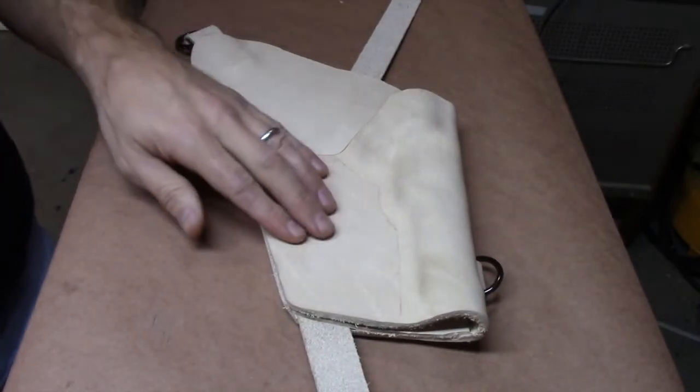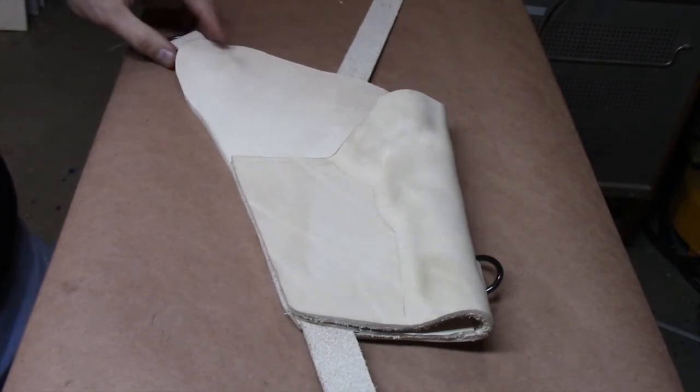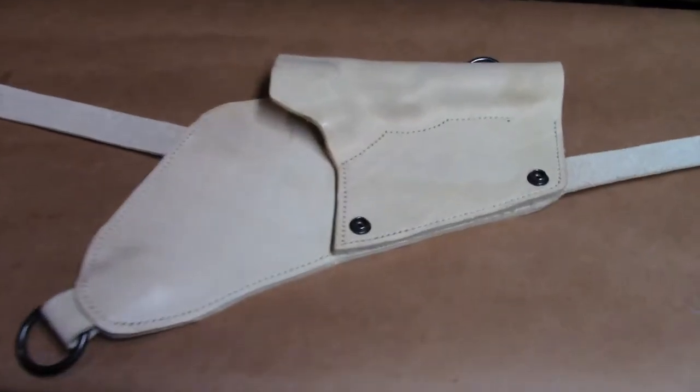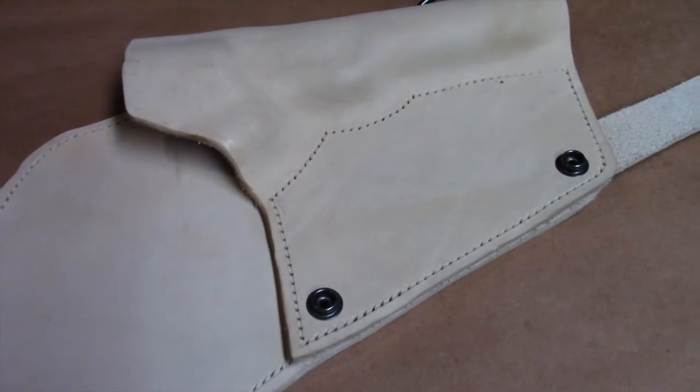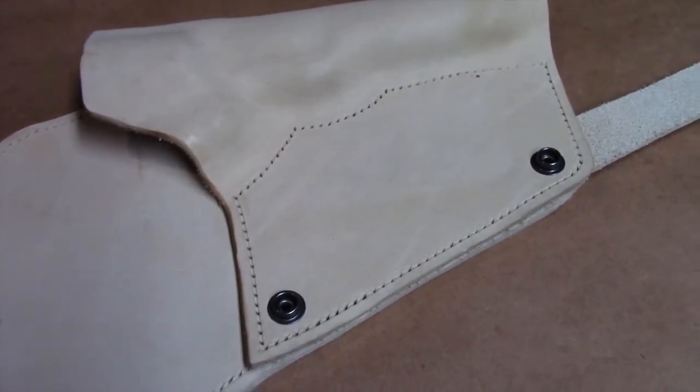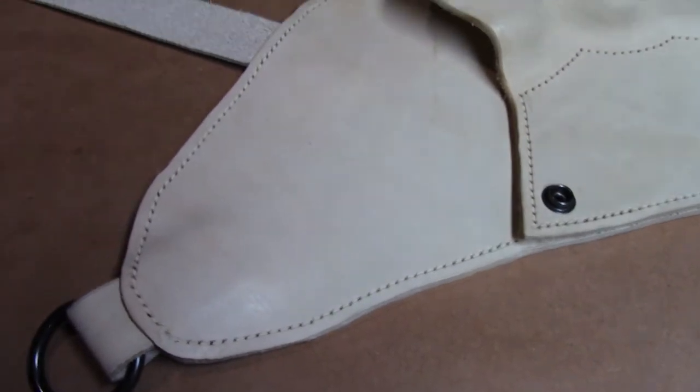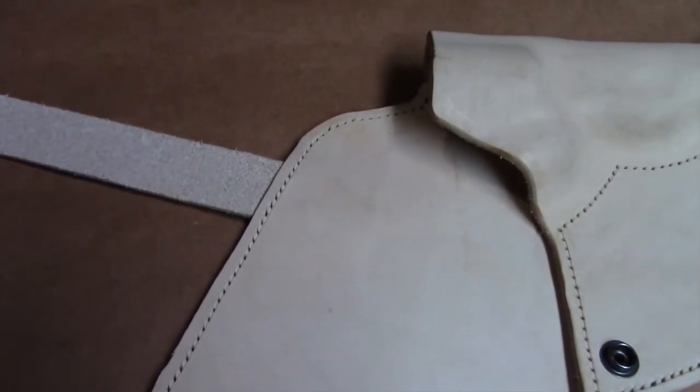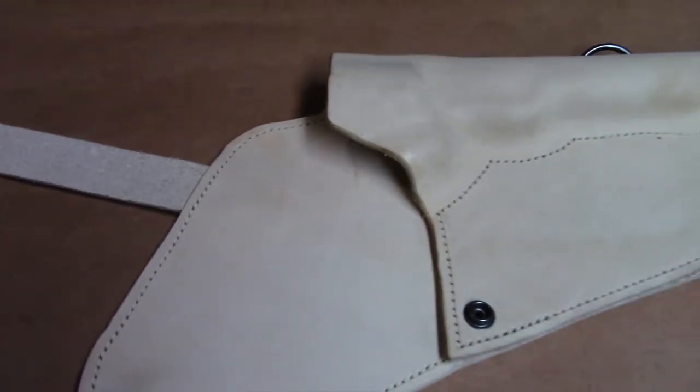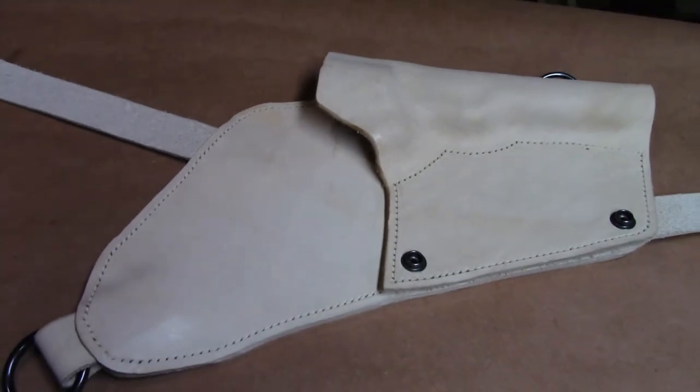Time to mark some holes and get a couple snaps in place before we get to sewing. As you can hopefully see, I've now punched in my stitch line. Everything is looking real good. I've got a couple snaps set in place. The ones that have to be set in place before I can stitch. And it should come together nicely.